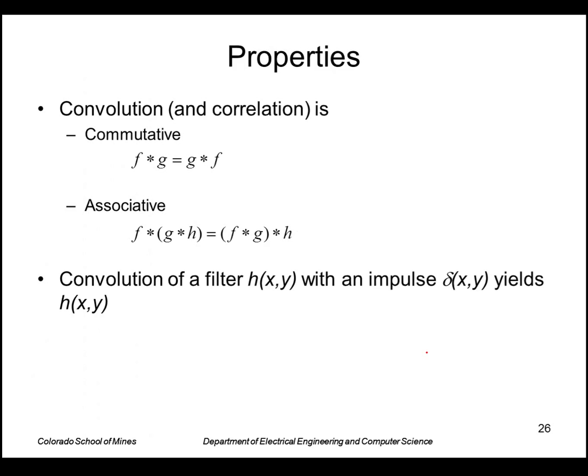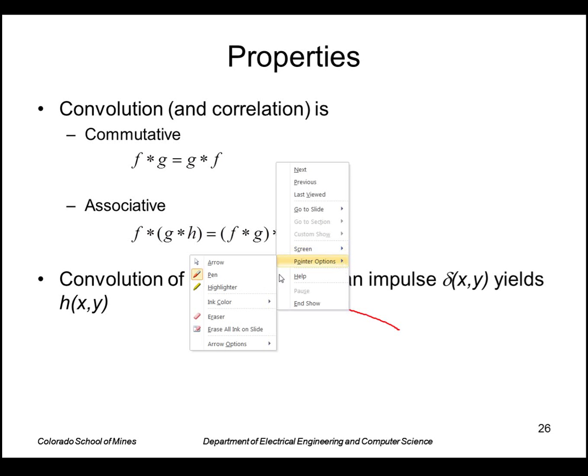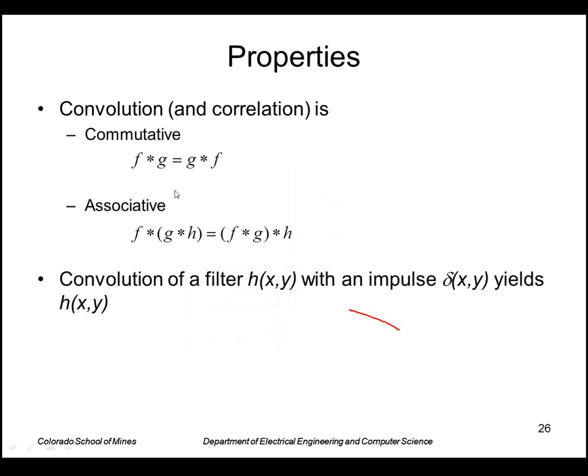Just some properties of these filters: they're linear filters, they're commutative and associative, and as I just mentioned, the convolution of a filter with an impulse yields the filter.